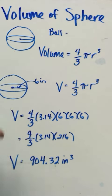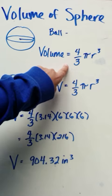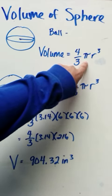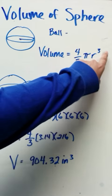So the volume of a sphere formula is right here. It's four-thirds times pi, which is 3.14, times the radius cubed.